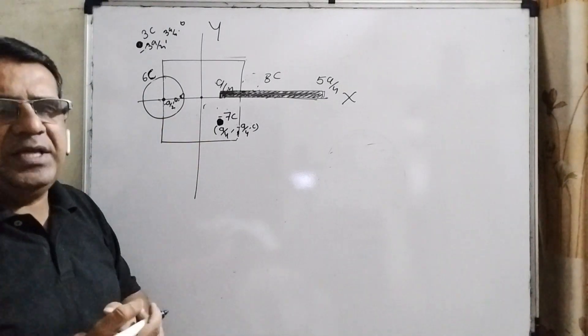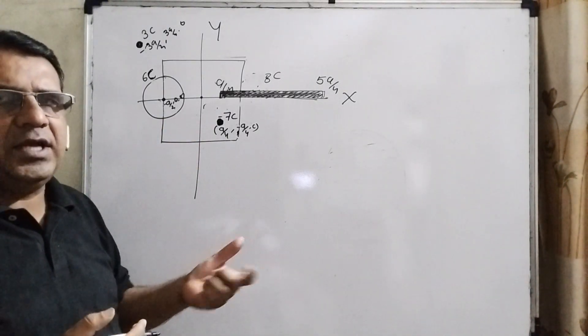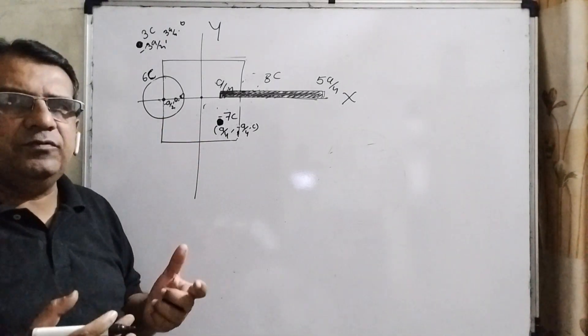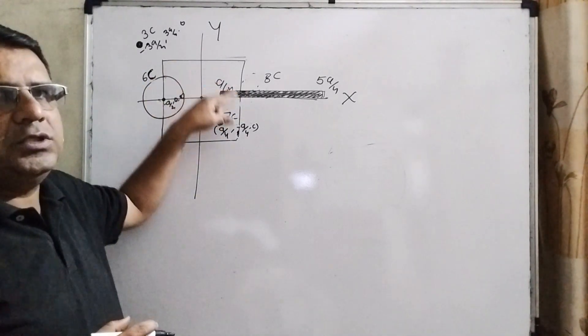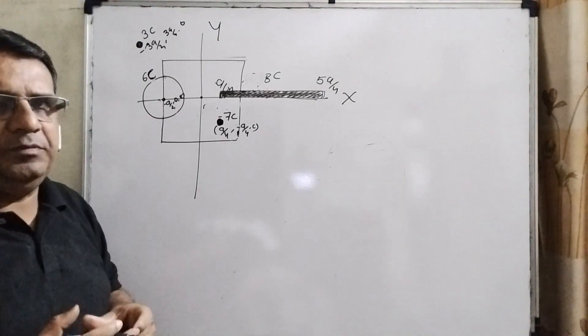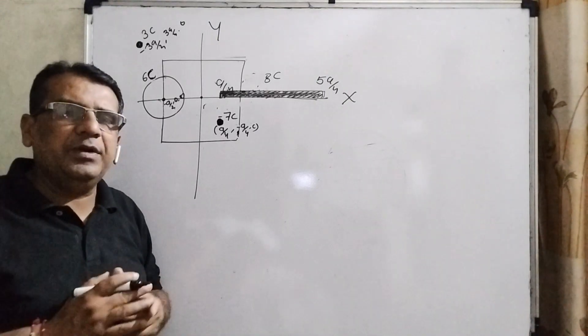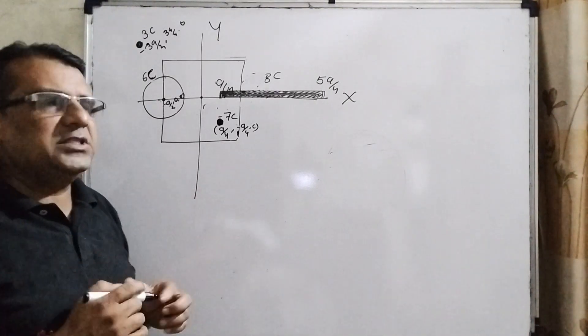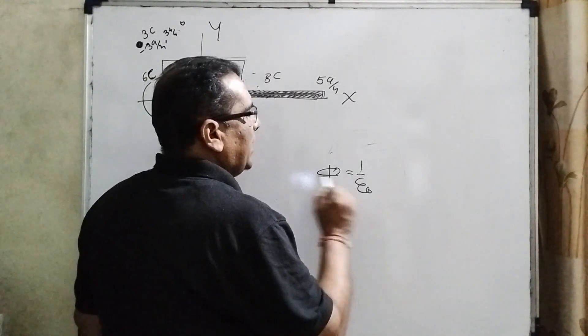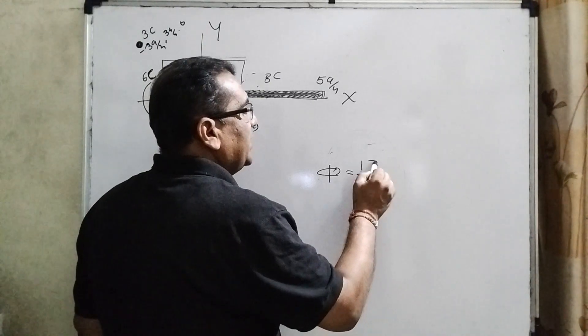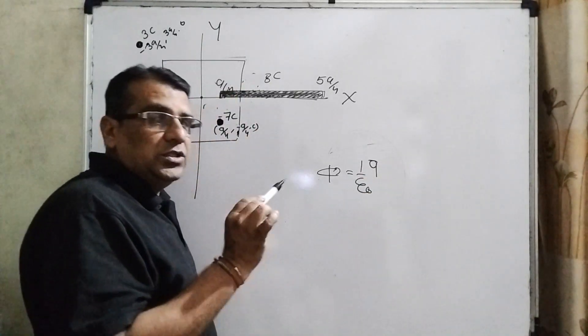Actually, this question is based on electric flux. And you know that electric flux means we have to find out total charge present in the closed body. Means Gauss's theorem. What is Gauss's theorem? Gauss's theorem says electric flux is 1/ε₀ times the total charge present in the closed body.